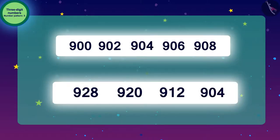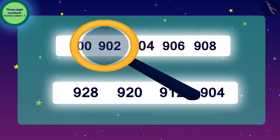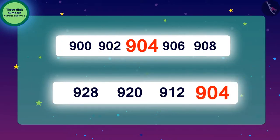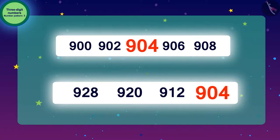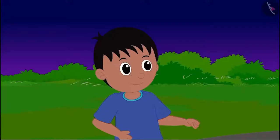Let's look at both the patterns together to find an answer to the alien's last code. We got the answer — 904! We can see that 904 is the number that appears in both the patterns. So the answer to our code is 904.